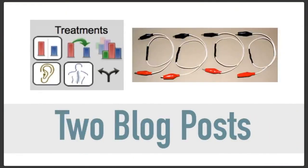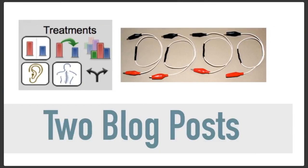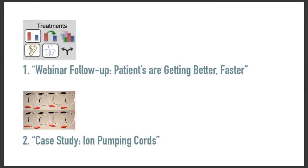Since the last webinar, there have been two blog posts that went out. One was a webinar follow-up — patients are getting better faster — and then there were some studies on ion pumping cords. In the webinar follow-up, I talked about my approaches to treatment and how the divergent treatment and tendinomuscular treatments is something that I combined together. The divergent treatment that I use with the ion pumping cords is more of a root treatment, and the musculoskeletal portion of what I do is more of a branch treatment.